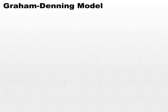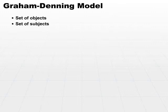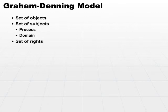The next model is the Graham-Denning model. This is made up of three different components: a set of objects, a set of subjects, which include both processes and domains, and then a set of rights. The idea is to associate a set of rights to a set of subjects and a set of objects.